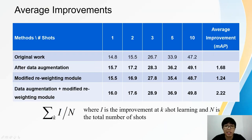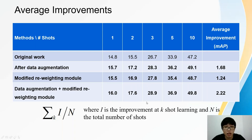This table shows the average improvements of the adjustments made. The calculation is done by summing improvements across all shot learning settings and dividing by the total number of shots. The highest average improvement is the combination of data augmentation and modified reweighting modules, which is 2.22 mean average precision, followed by data augmentation alone at 1.66 mean average precision, and lastly modified reweighting modules alone at 1.24 mean average precision.